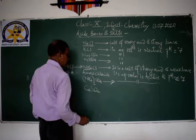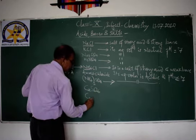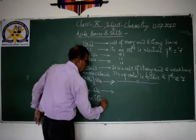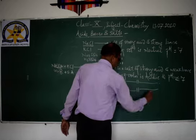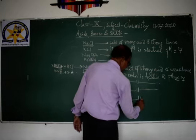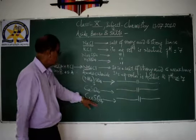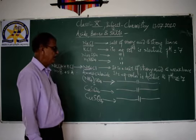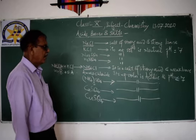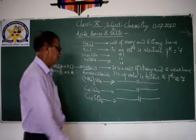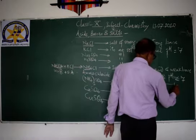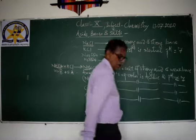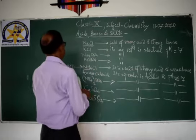Then CuSO4 — copper sulfate. This is a salt of strong acid and weak base. Its aqueous solution will be acidic in nature, and pH will be less than 7.